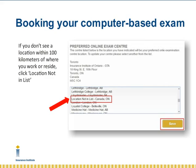Your first step is to log into your online account on insuranceinstitute.ca. You will then confirm your preferred online exam centre, located under the My Profile tab. If you don't see a location within 100km from where you reside, please don't worry — just choose the location entitled Location Not In List. This will notify the examinations department that they need to make arrangements for a more accessible exam centre location once your registration is complete.